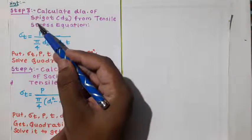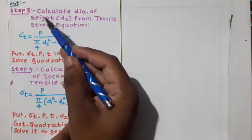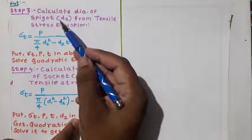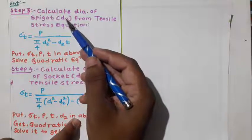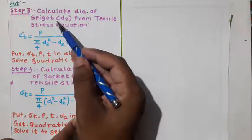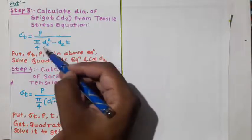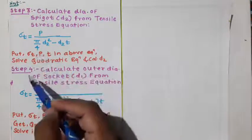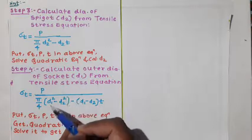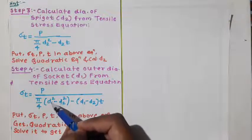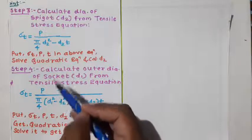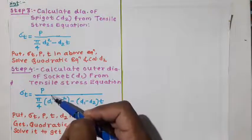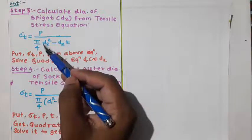Referring to the design procedure of the cotter joint at step number 3, we calculate the diameter of the spigot. From the cut section, the diameter of the spigot and the inside diameter of the socket are both denoted by D2. From step number 3's equation we get D2, which is the diameter of the spigot or inner diameter of the socket. Then from step number 4's equation we calculate D1, the outer diameter of the socket. So first we calculate D2 using step 3, then D1 using step 4.